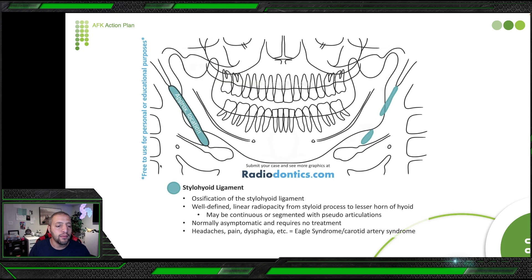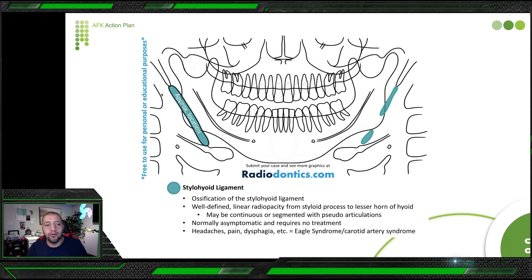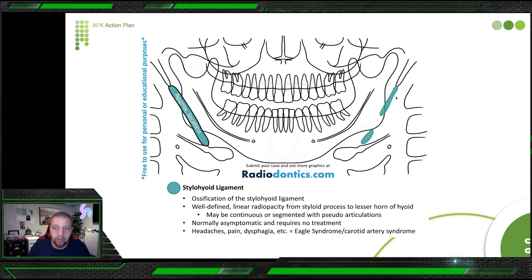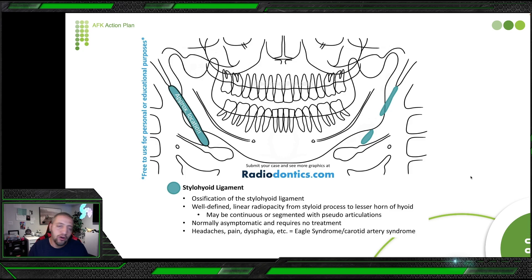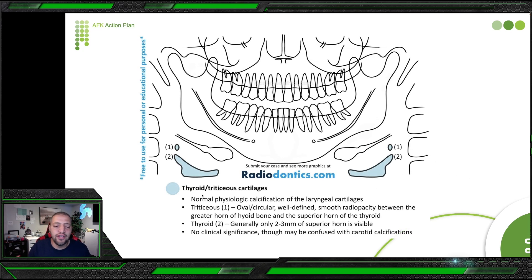Stylohyoid ligament calcification appears as a well-defined linear radiopacity from the styloid process to the lesser horn of the hyoid bone, posterior to the ramus of the mandible. Normally asymptomatic and requires no treatment. It can be associated with Eagle syndrome or carotid artery syndrome. Note the approximate location — it may extend from the styloid process toward the hyoid bone.